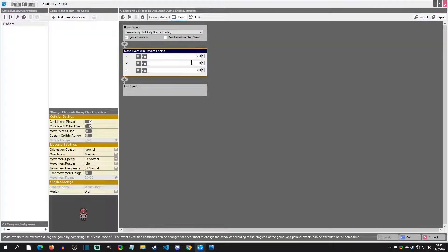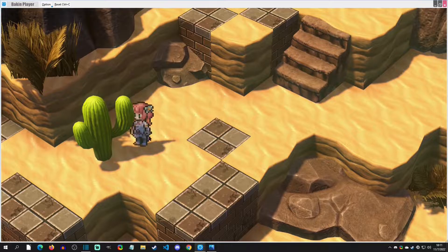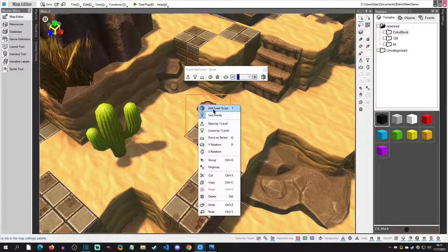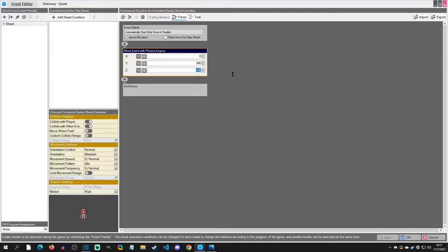Now the last thing we can do just real quick to show is that you can actually add a Y to that as well. So let's say that we wanted a little hop as we're moving, we can have a little hop there.